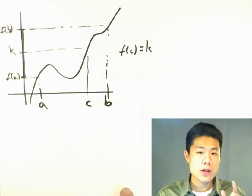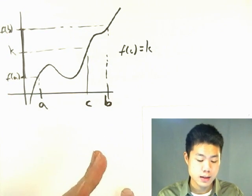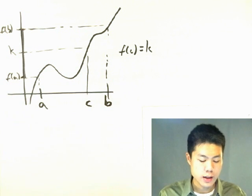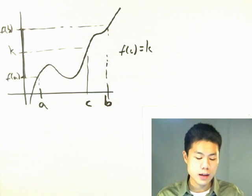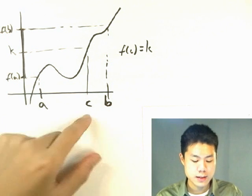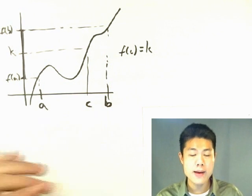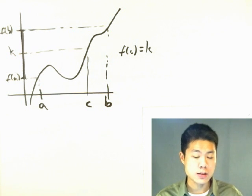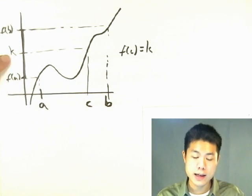However, the Intermediate Value Theorem tells us that at least one c value will exist. It does not tell us how many c values — it tells us at least one. So in this case, there is only one c value that corresponds to k here.